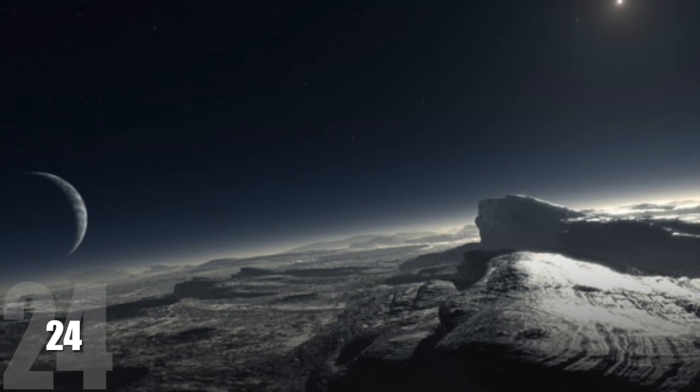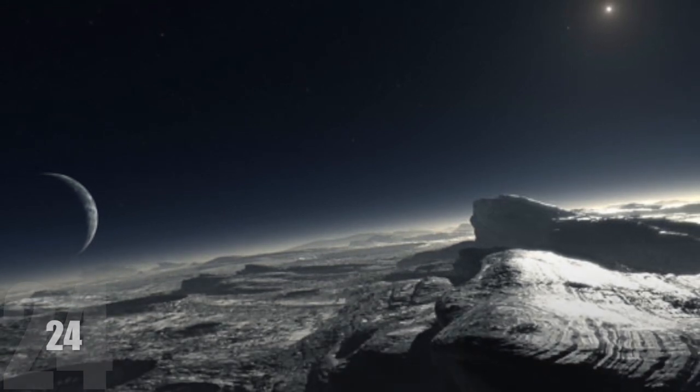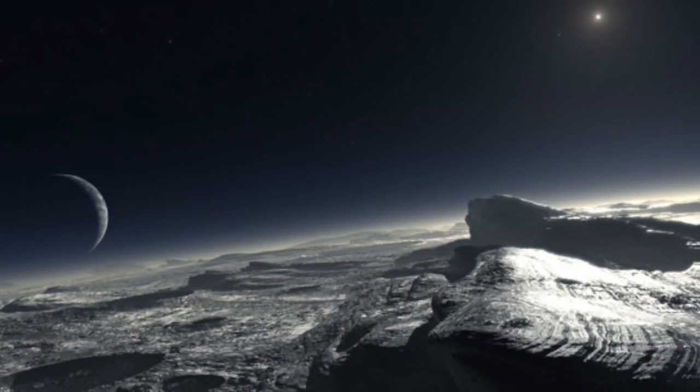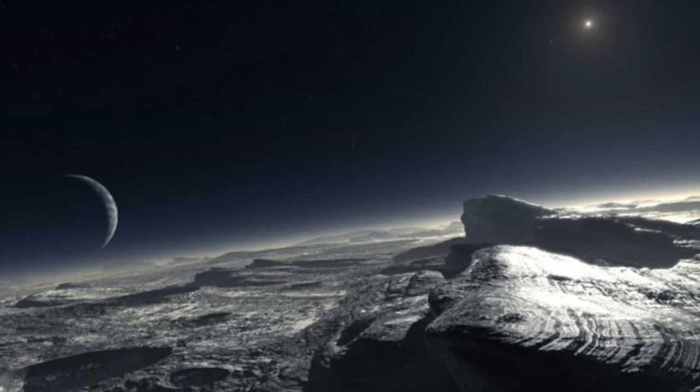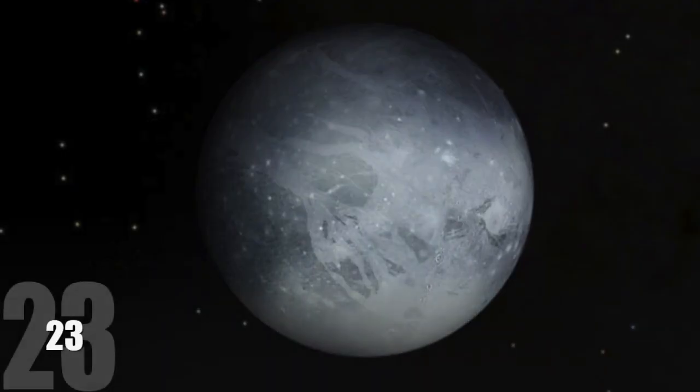24. Pluto's surface is one of the coldest places in the solar system at roughly minus 375 degrees Fahrenheit. That's about minus 225 degrees Celsius. 23.